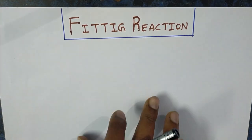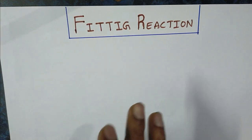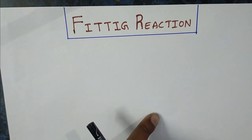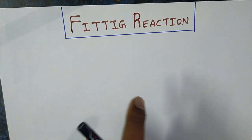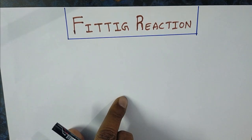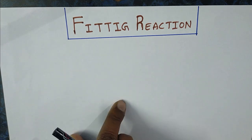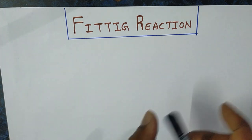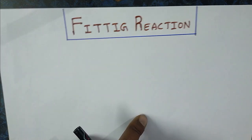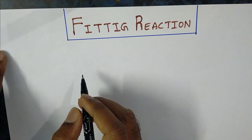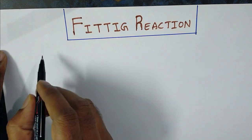So in the Fittig reaction, we take two moles of aryl halides. Two moles of aryl halides when reacted with sodium metal in the presence of dry ether, we get biphenyls.